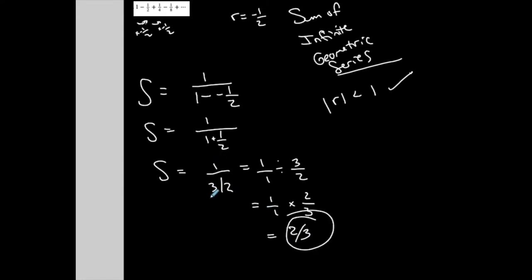I mean, one divided by a fraction is always the reciprocal of that fraction. So the sum of this infinite geometric series is equal to two-thirds.